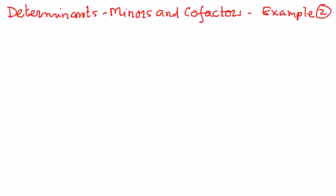Welcome to my presentation. In this presentation, let us try to find the minors and cofactors for a 3 by 3 matrix. So let's say we have a matrix A, and the elements of this matrix are as follows.